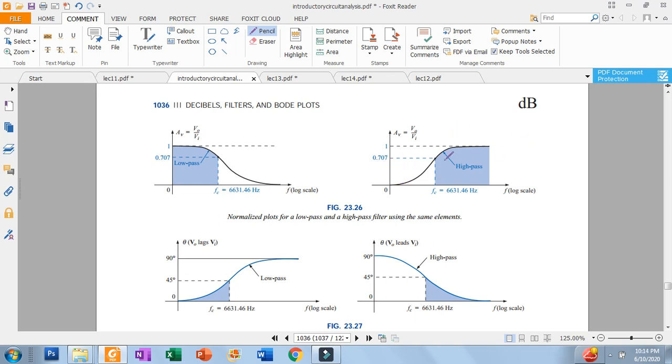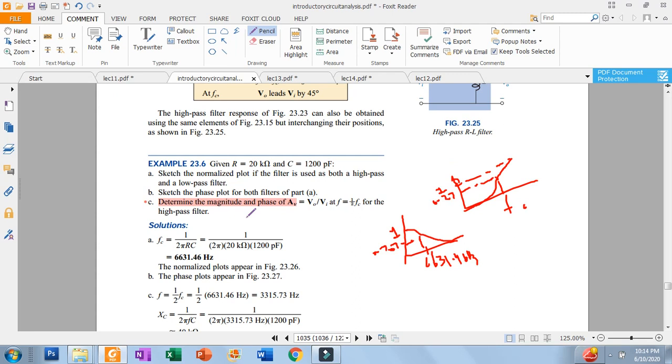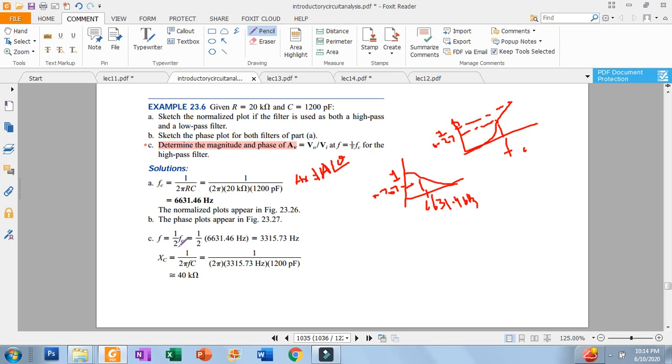This is for your high pass filter. This is very simple. If you skip the B part, then determine the magnitude and phase. You need to find the magnitude and the angle. The frequency is half of the critical frequency.